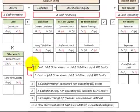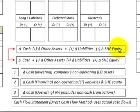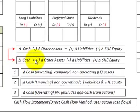Let's look at how we'd set up our equation. For our assets we'd have the change in cash plus all other assets equal our change in liabilities plus our change in stockholders' equity. What I've done is moved the change in other assets to the other side, so the change in cash equals minus the change in all other assets plus the change in liabilities plus the change in stockholders' equity.